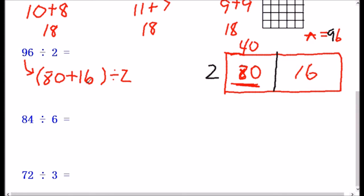So I basically broke this up into 80 plus 16 divided by 2. So 2 times what equals 16? Well, that's going to be 8. So we see that when we divide this, we did 80 divided by 2, which gives us 40 plus 16 divided by 2, which is 8. That gives us 48. So 96, this total area of 96 divided by 2 is going to be 48.